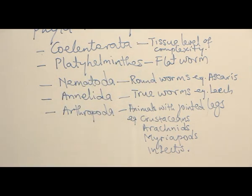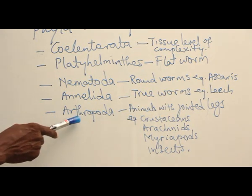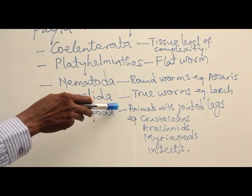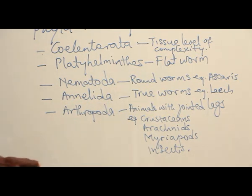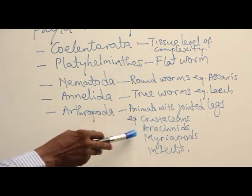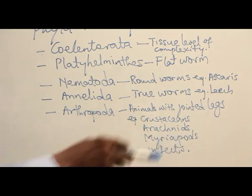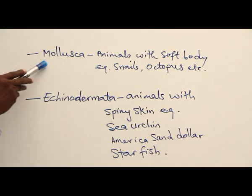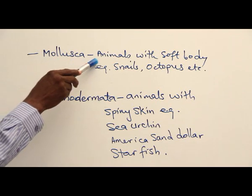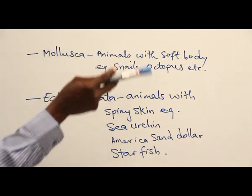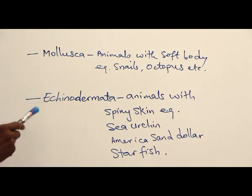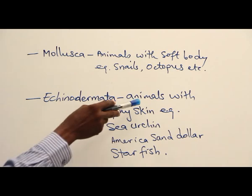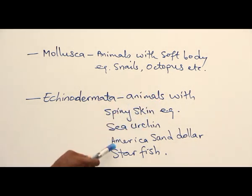Examples of Annelida include leech and earthworm. Phylum Arthropoda contains animals with jointed legs, and has four classes: class Crustacea, class Arachnida, class Myriapoda, and class Insecta. Phylum Mollusca contains animals with soft bodies — examples include snails, octopus, squid, and slugs. The last phylum here is Echinodermata, a group of animals with spiny skin, which includes sea cucumber, sand dollar, and starfish.